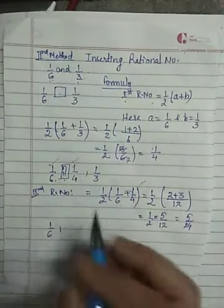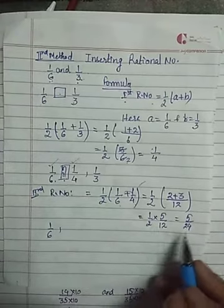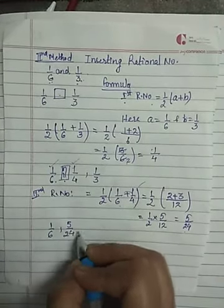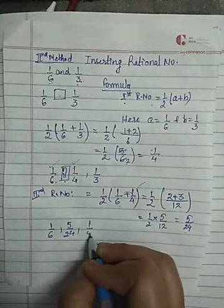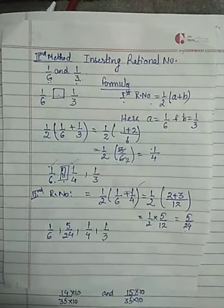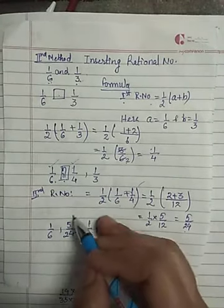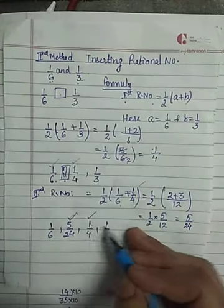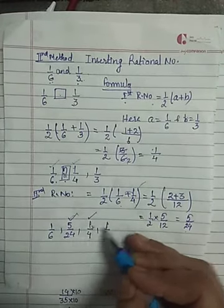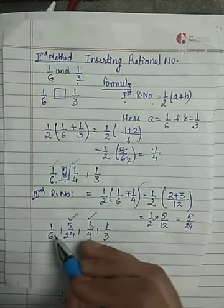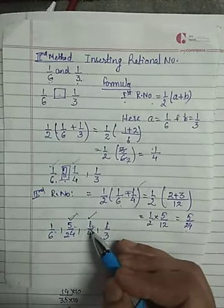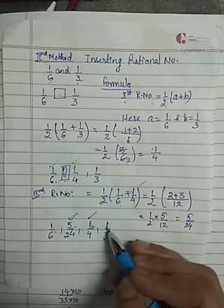So far we have: 1/6, then 5/24, then 1/4, then 1/3. Now suppose I need to insert one more rational number. I can insert in between any of these pairs — between 1/6 and 5/24, between 5/24 and 1/4, or between 1/4 and 1/3.